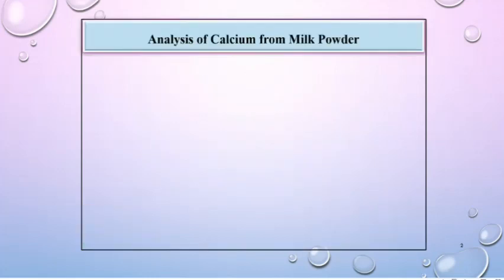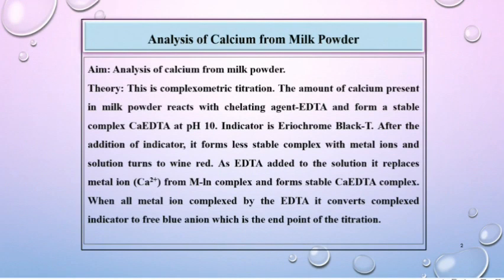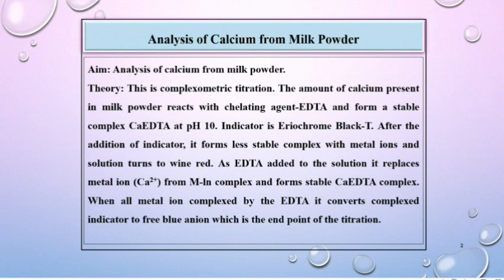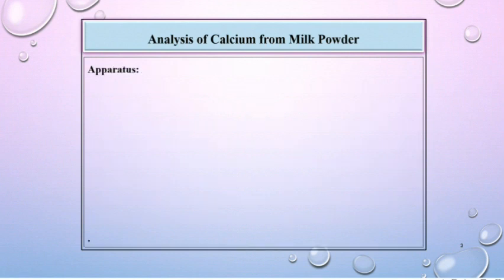Let us start the experiment. Analysis of Calcium from Milk Powder — this is a complexometric titration. The amount of calcium present in milk powder reacts with the chelating agent and forms a stable complex at pH 10. The indicator is eriochrome black T. After the addition of indicator, it forms a less stable complex with metal ions and the solution turns wine red. As EDTA is added to the solution, it replaces the metal ion from the metal-indicator complex and forms a stable Ca-EDTA complex. When all metal ions are complexed by the EDTA, it converts the complex indicator to a free blue anion, which is the endpoint of the titration.